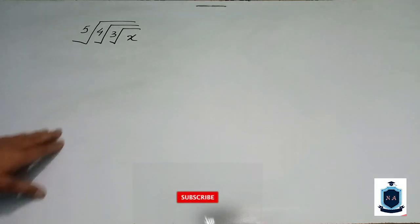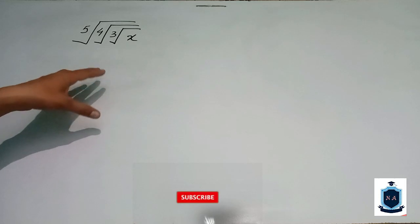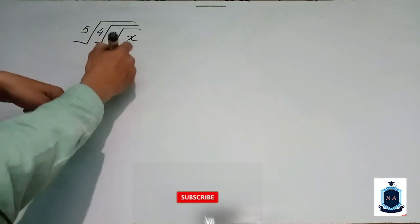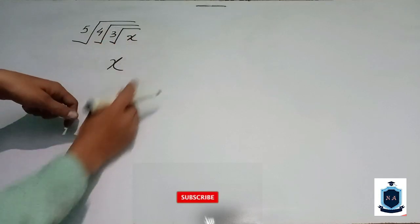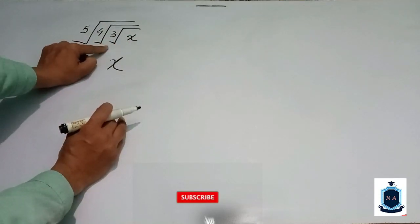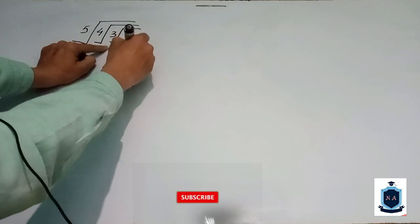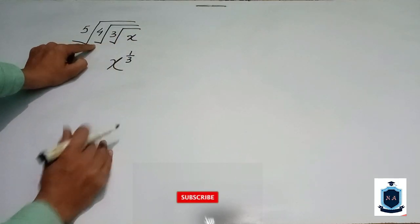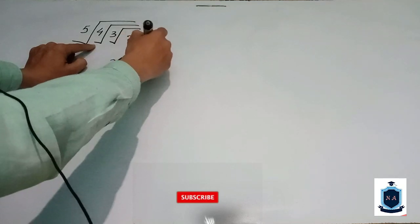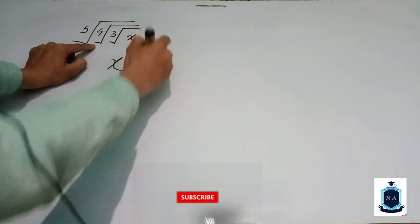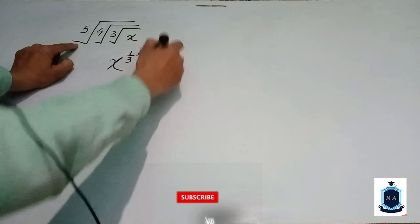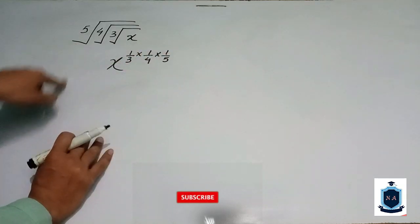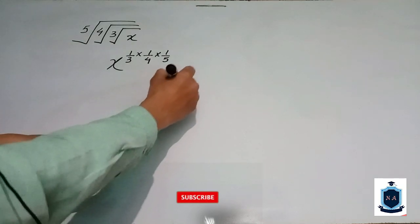So you will simply open the power. Here you can see that if I write this x, the root value is 1 upon 3, then 1 upon 4, then 1 upon 5 from the power rules.